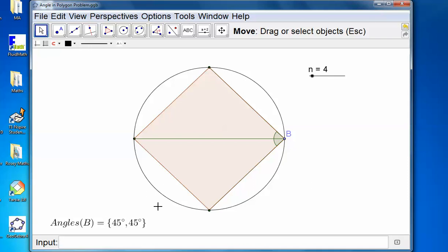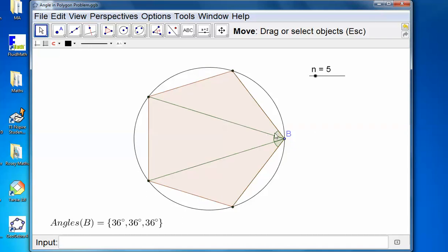And Lockhart asks, for any regular polygon, any n-sided regular polygon, are these angles always equal? So they are for a four-sided regular polygon. For a five-sided regular polygon, they're all 36, as you can see.